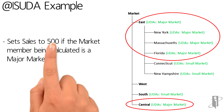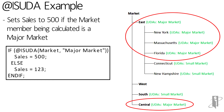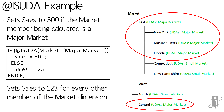In my example, if any of the members have a UDA of major market, I want to set sales equal to 500. If they do not have this UDA — meaning they have a different UDA or no UDA at all — I want to set sales equal to 123. So I say: if @ISUDA(Market, "major market"), then sales equals 500; otherwise, sales equals 123, which it will do for Connecticut, New Hampshire, West, South, and even total market.